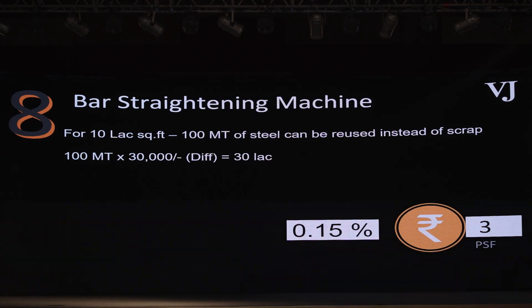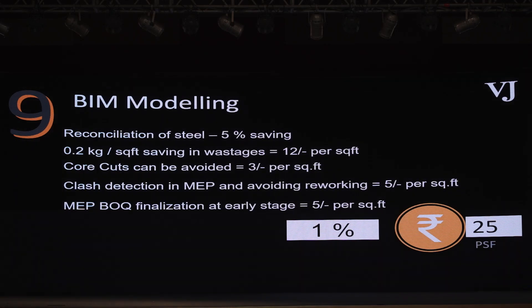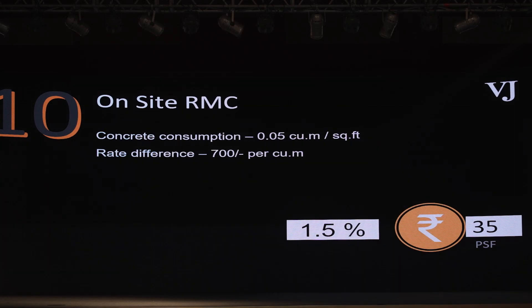For wastage management, there is a bar straightening machine you can get. For a larger site, this makes sense because you're able to recycle and reduce your scrap from 3% down to about 0.5% to 1% — we've been using this quite effectively at all our sites. BIM modeling is becoming more and more crucial every day because there are a lot of pilferages, wastages, and thefts that happen on site. To ensure our engineers are paying the right quantity of work done to contractors, it's important to get everything into a 3D model and use BIM. On-site RMC is a no-brainer — wherever you have the space, going for an on-site RMC will easily save about 700 rupees per cubic meter, which has a significant impact on your costing.